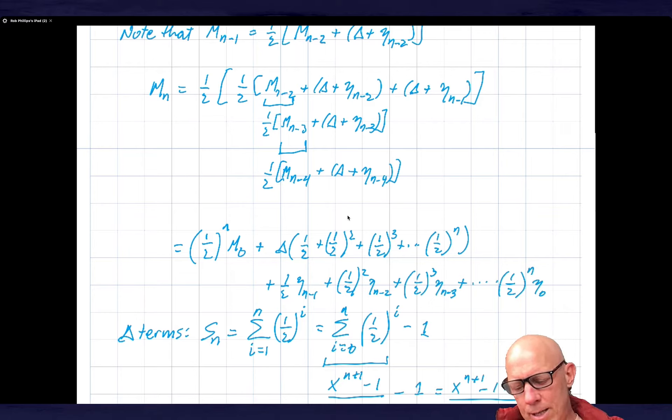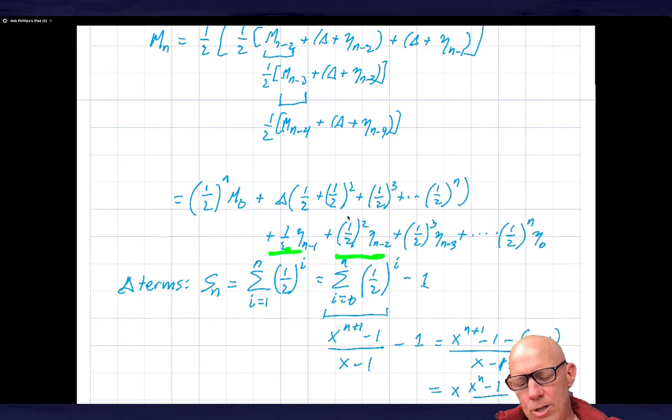When we go through this n times, the m0 term is given by one half to the n power times m0. Then the delta term leads to this geometric series. Notice that each generation I pick up another factor of one half. The noise term similarly has the feature that with each depth farther into the recursion, I get a power of one half that's higher order.